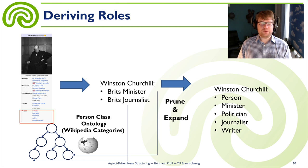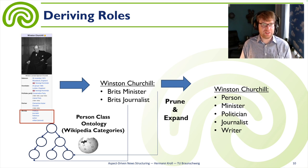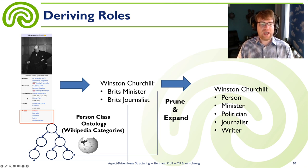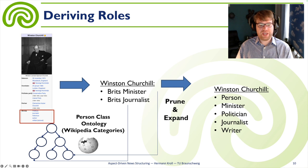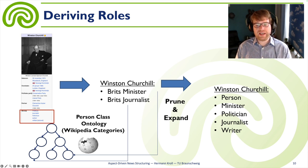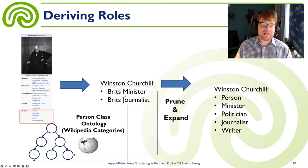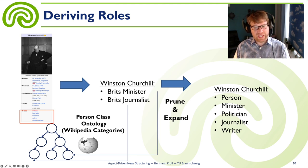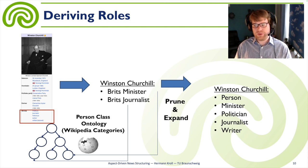To derive a person's roles, we used the Dutch Wikipedia and extracted information from the infoboxes. Different occupations or roles are mentioned there. With the help of Wikipedia categories, we applied pruning and expanding rules to obtain a concise list of roles — for example, not 'British minister' but just 'minister' — so we had rules to prune the results.